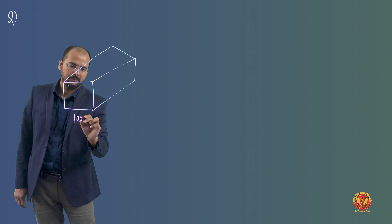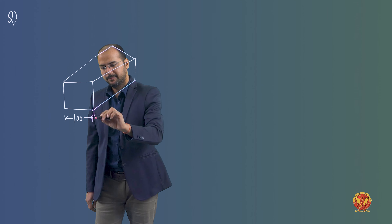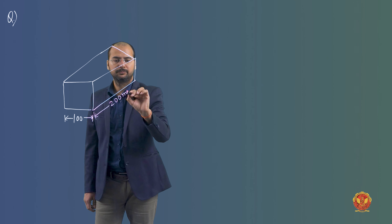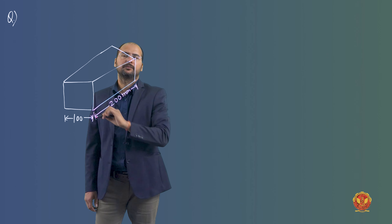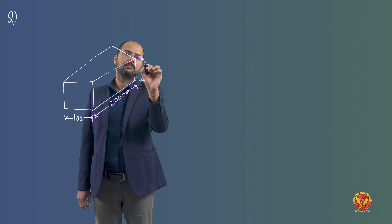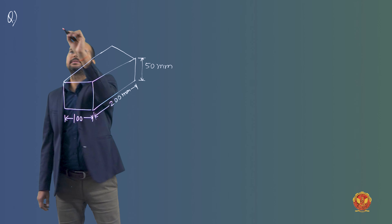The dimensions of the casting are: this side is 100 mm, this side is 200 mm, the height is 50 mm, and this is a steel casting.